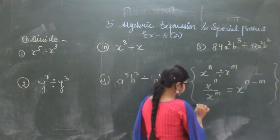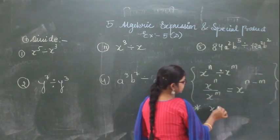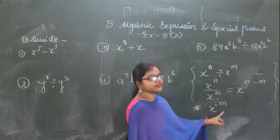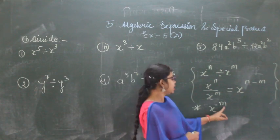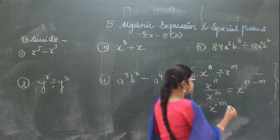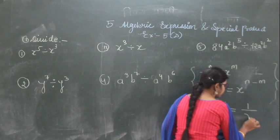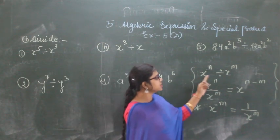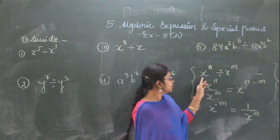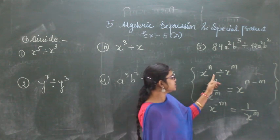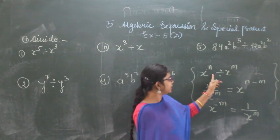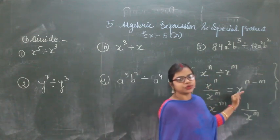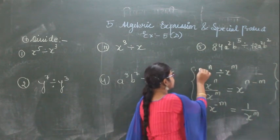One more rule: if anything is raised to a negative power — x to the power minus m, where x is the variable and m is the integer — you can write this as 1 upon x to the power m. So when bases are same and division is used, the powers are subtracted. When multiplication is used with the same base, the powers are added.